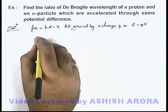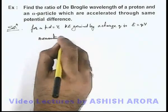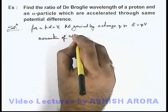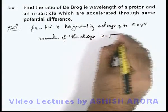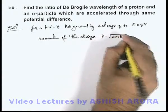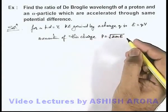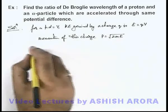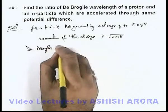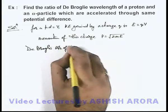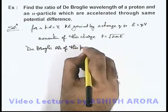Now, momentum of the particle or momentum of this charge can be written as p equals root of 2mE. This is the relation between the kinetic energy and momentum of the particle. And if we calculate the de Broglie wavelength of this particle or this charge...